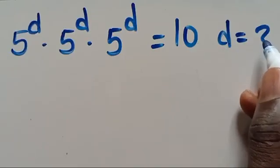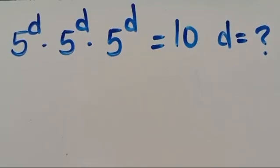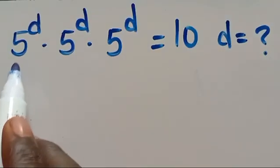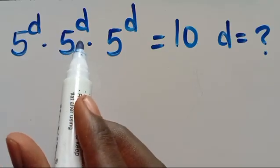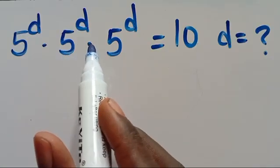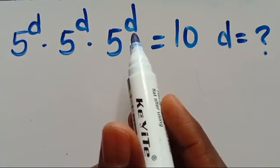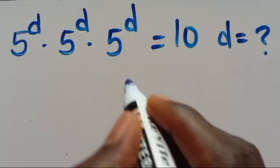Hello! What is the value of D? Given that you have 5 to the power of D multiplied by 5 to the power of D multiplied by 5 to the power of D equals 10.